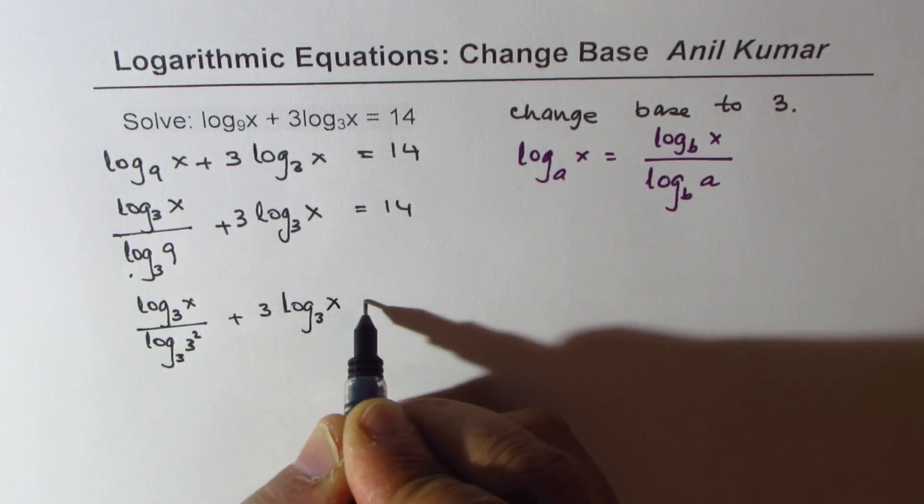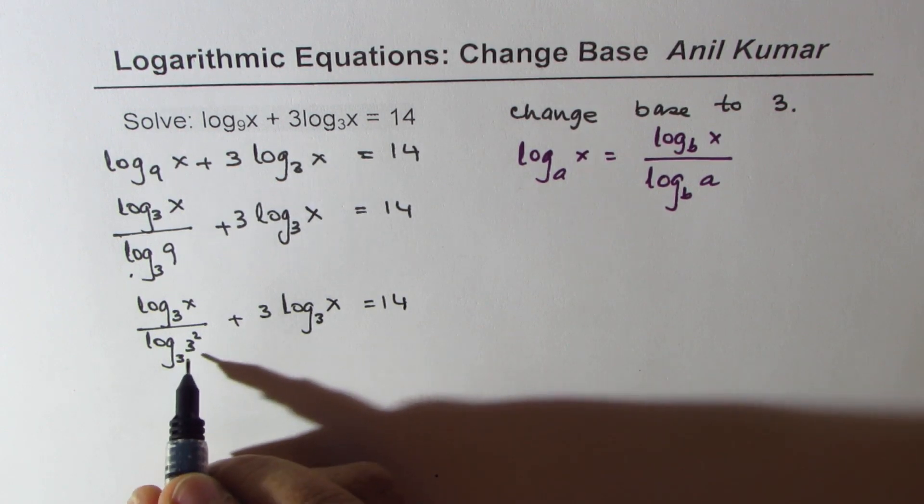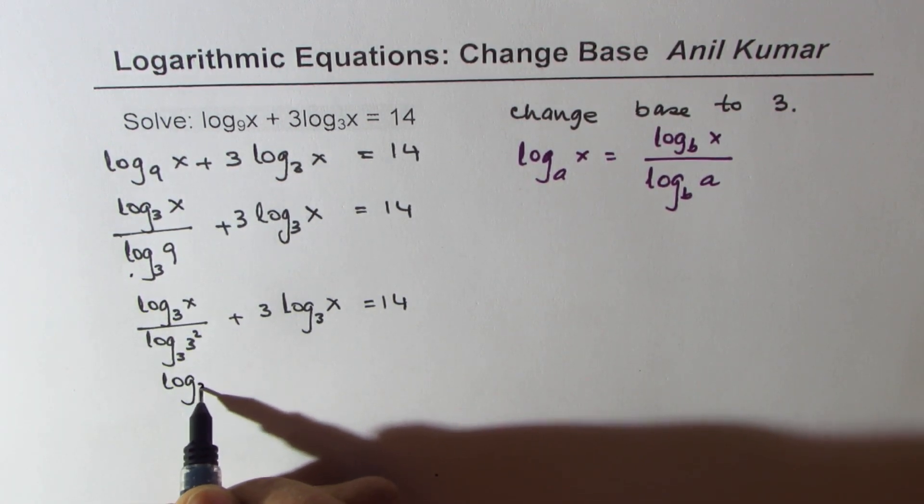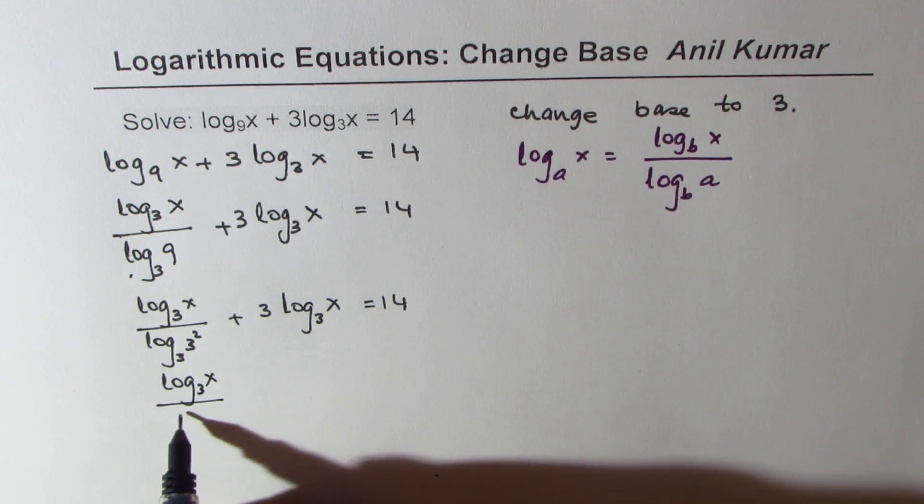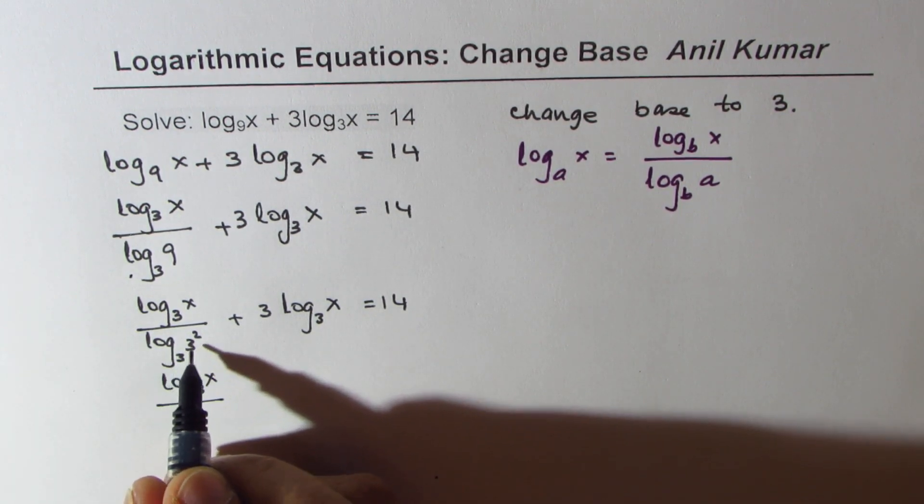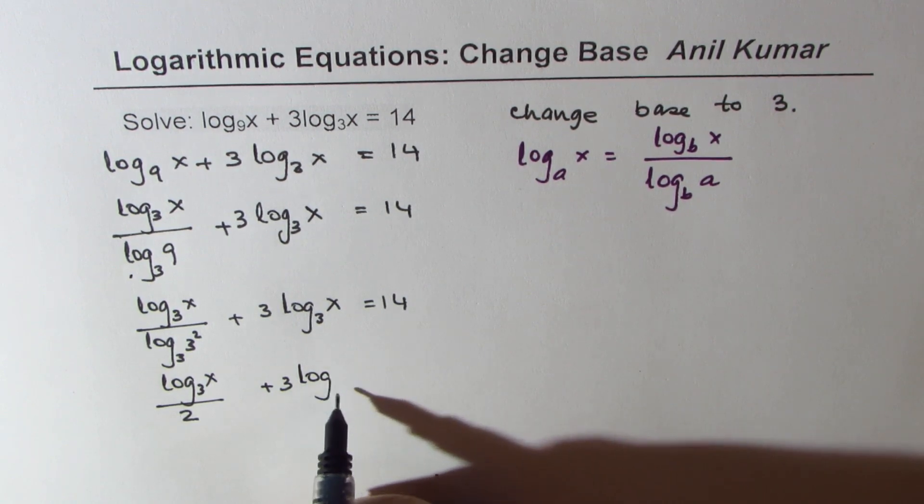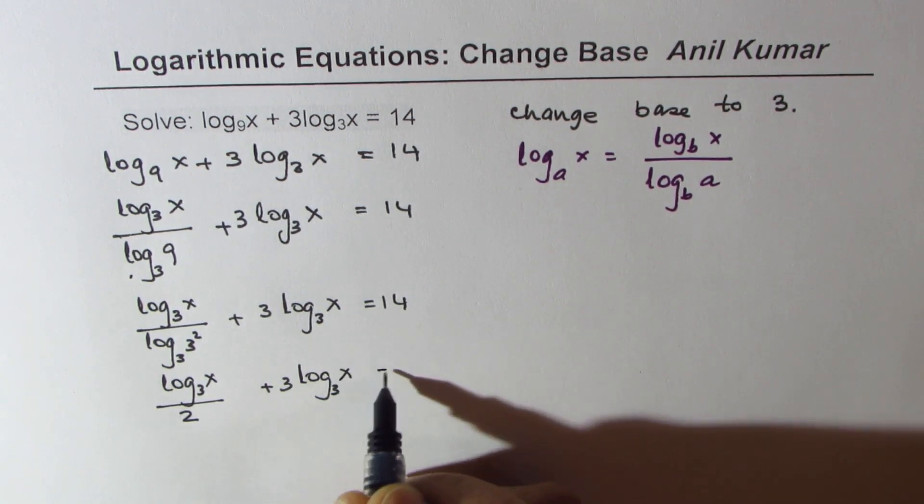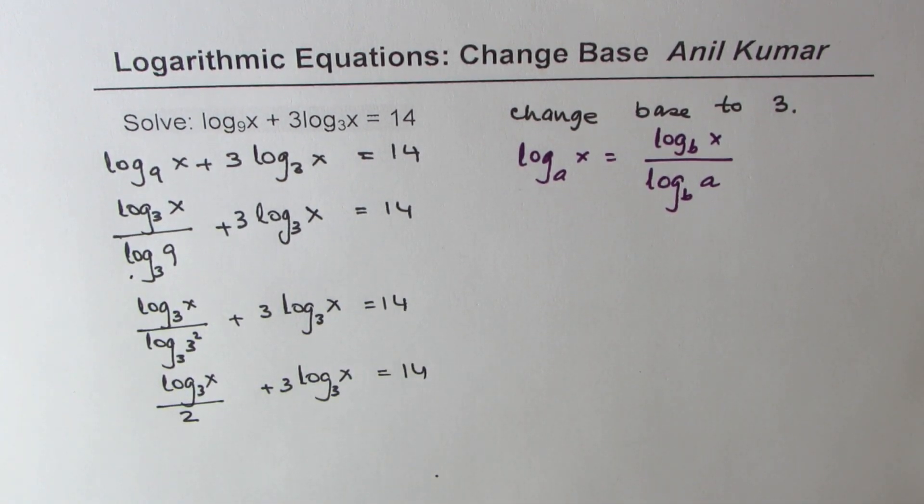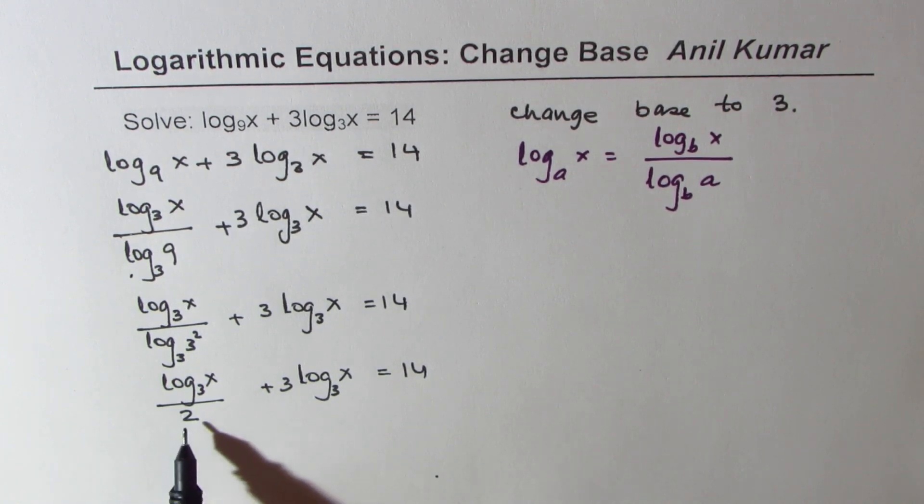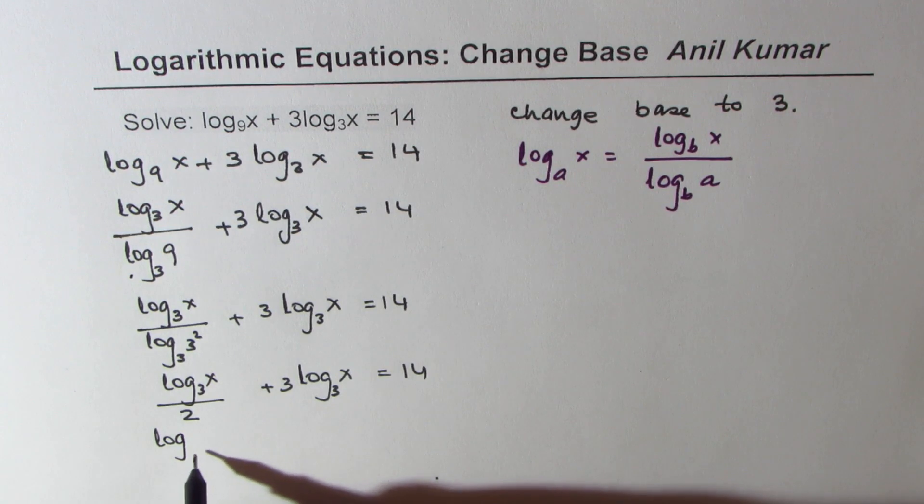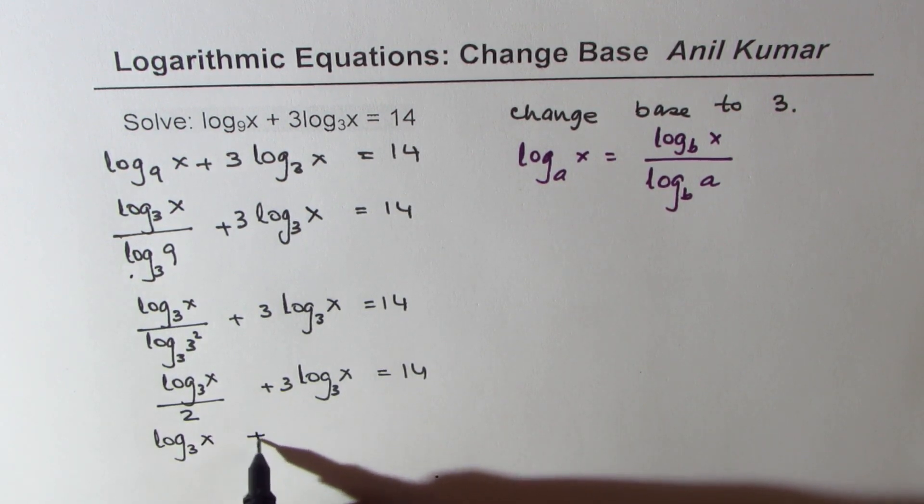For the first term we get denominator as 2: log base 3 of 3 squared, and second term is as such, equals to 14. Now if I multiply everything by 2, I get log base 3 of x plus 6 times log base 3 of x equals 2 times 14.